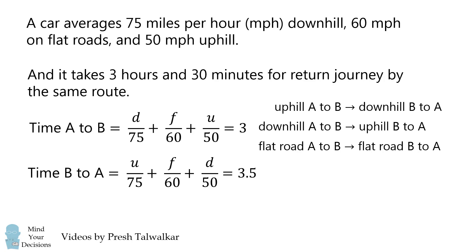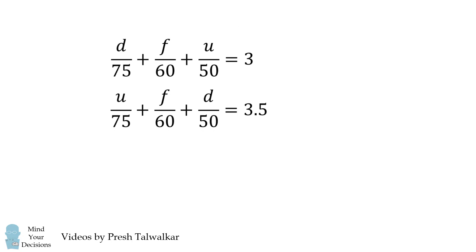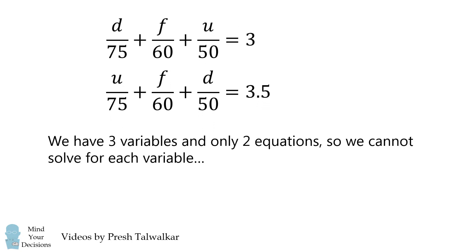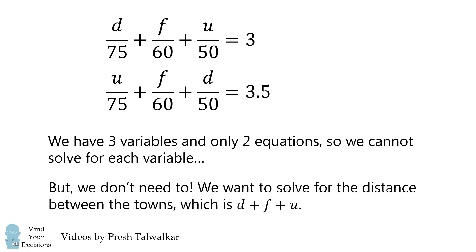And this will be a total of 3.5 hours. So we now have two equations, but we have three variables, so we can't solve for each variable explicitly. But we don't need to. We only need to solve for the distance between the towns, which is the sum of D, F, and U.